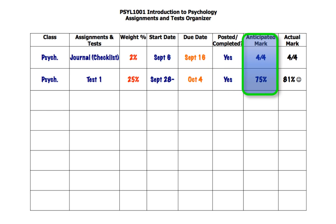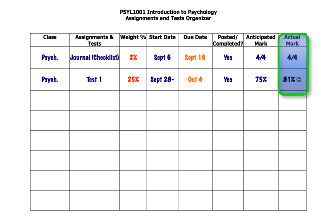A bit of goal setting is: what do you anticipate getting from the test or the assignment, and put the amount of work in to achieve that anticipated mark. Then when you get your mark, place it in here and see how you did, and judge your work effort against what kind of mark you got.